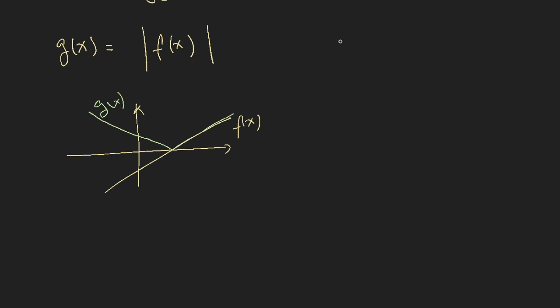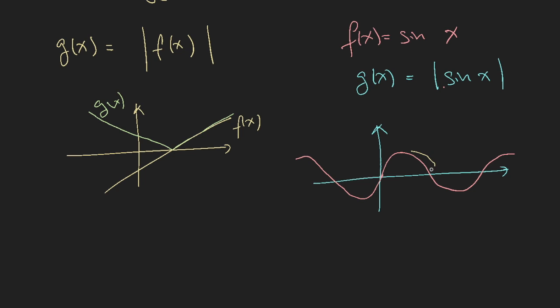So if you have a function f(x) equals sin of x, and if you were to plot g(x) equals the modulus of sin x, let's see what this looks like. So f(x) will look like this, something like this. g(x) will be this - you want this part, and over here you want to reflect it. So your function will look like this.